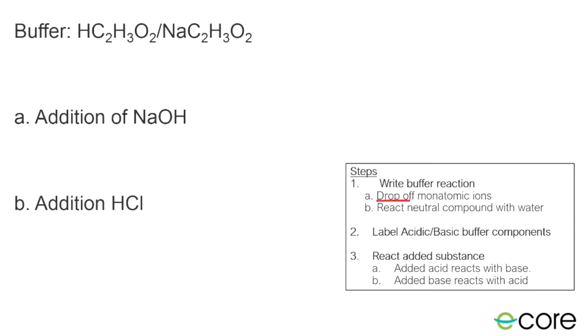It tells us to drop off the monatomic ions. That just means the counter ions like sodium or potassium or chlorine that will often be there on our conjugate species. So here our sodium ion is our monatomic ion. So we're just going to drop that off. And that's because in solution it dissociates, and it's not an important part of the buffer.